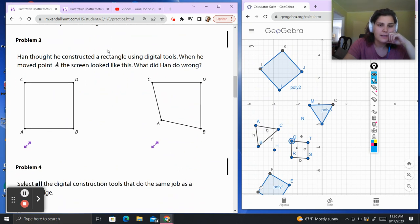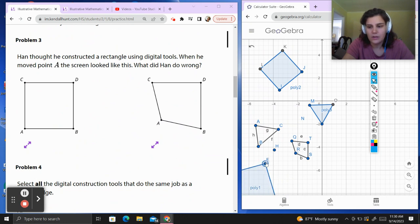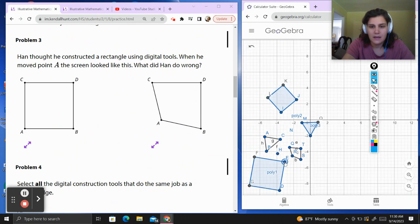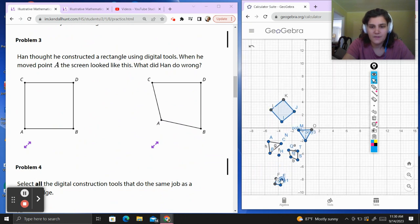Problem 3. Han thought he constructed a rectangle using digital tools. When he moved point A, the screen looked like this. What did Han do wrong? Han made something that looked kind of like this. This is obviously not a construction. He must have tried to freehand it using points. Because if he had constructed it, it would have looked something more like this, and when he moved a point, it would have stayed the same shape.